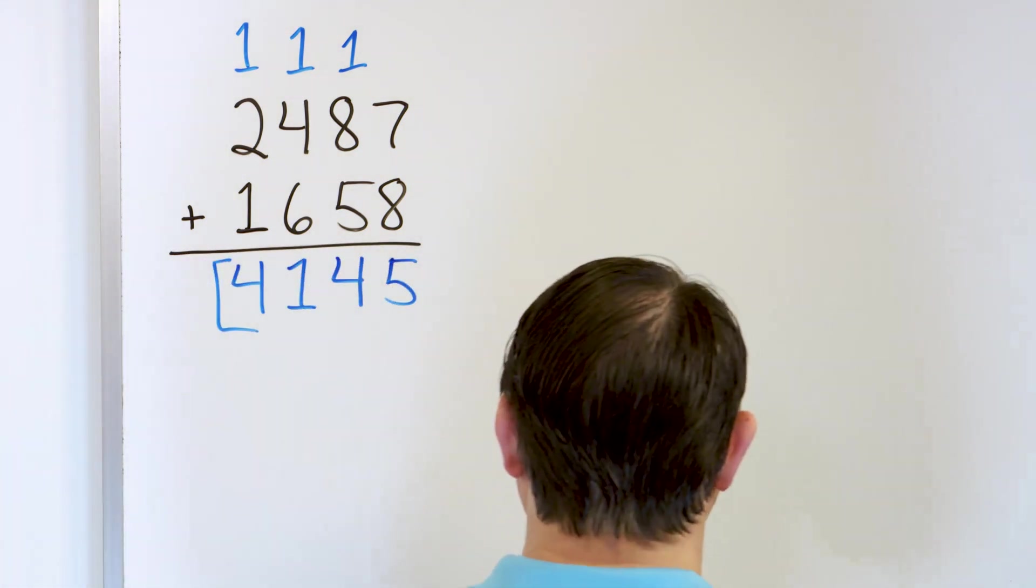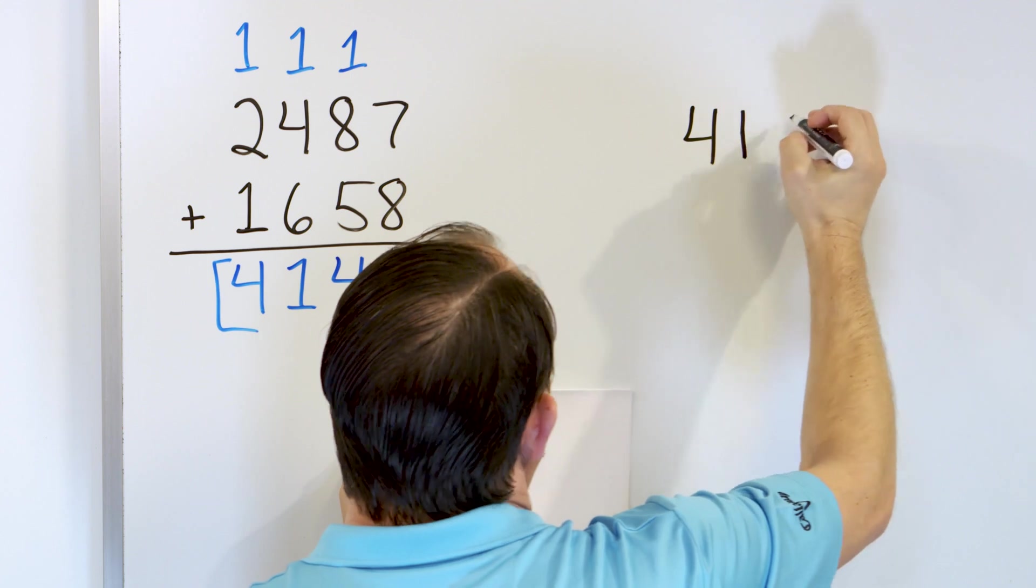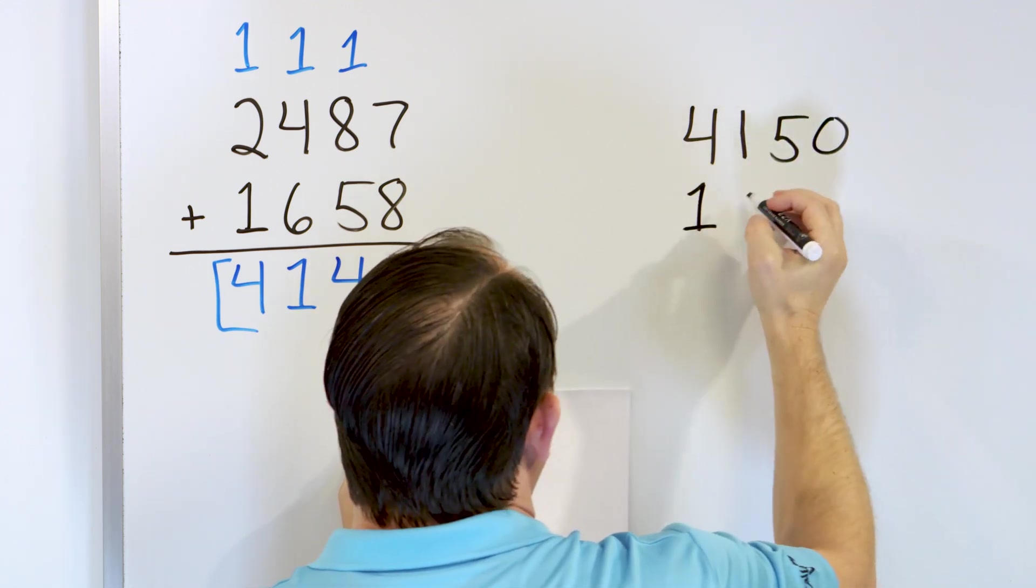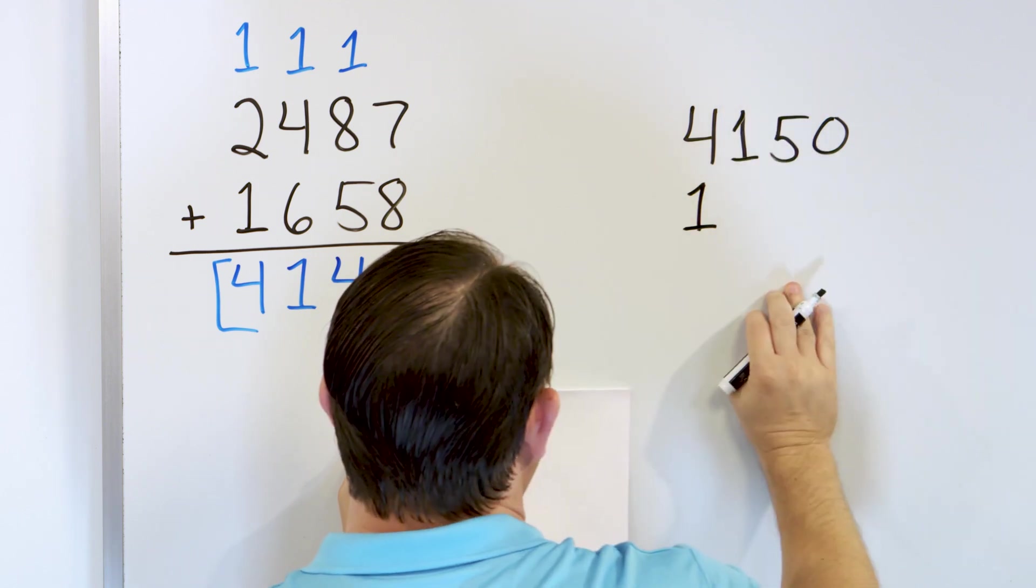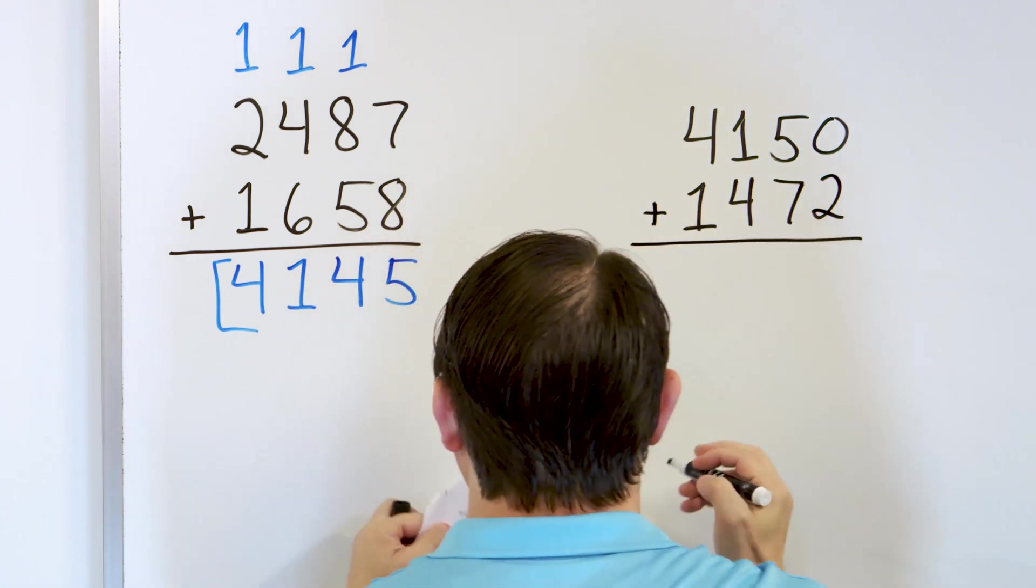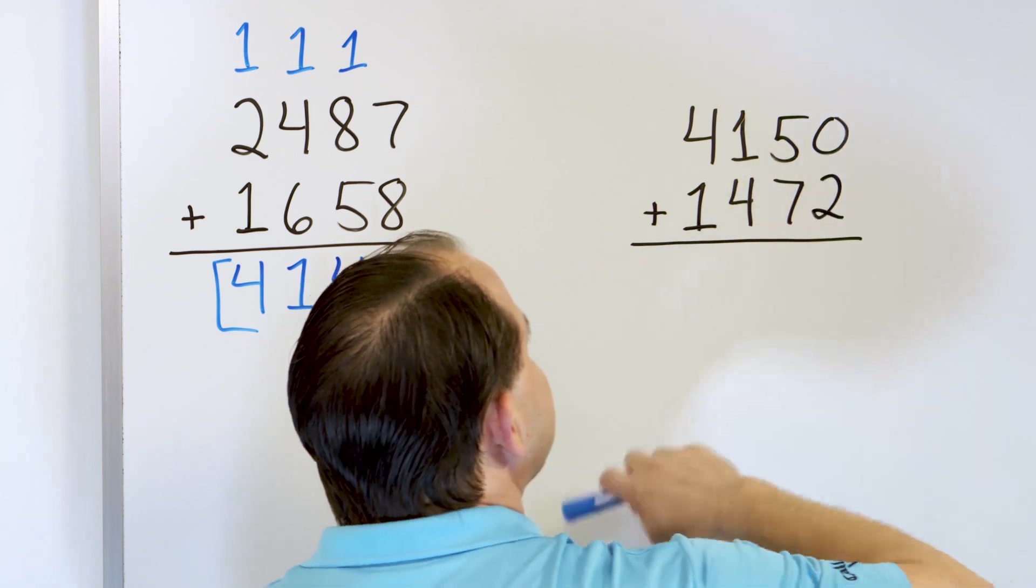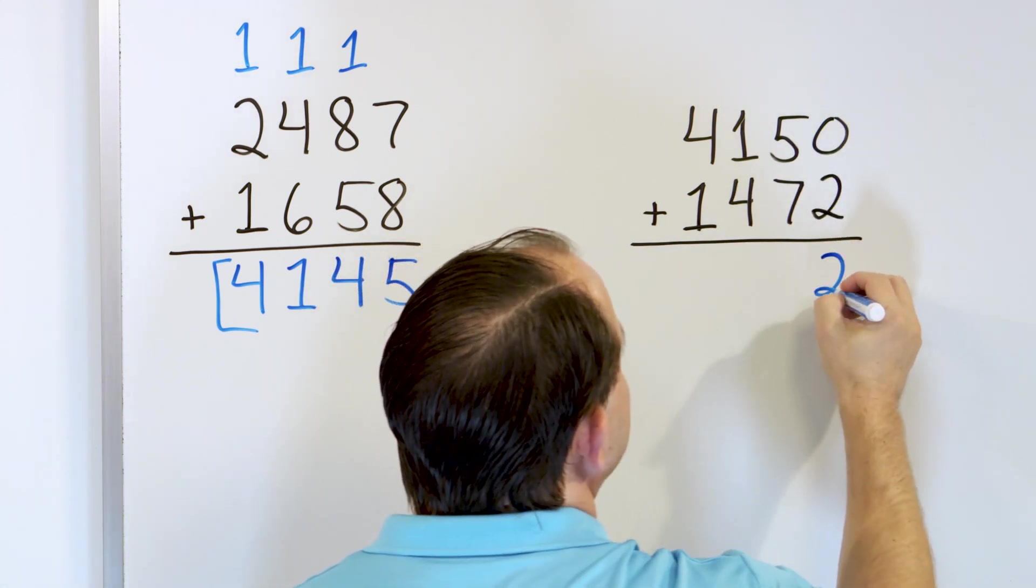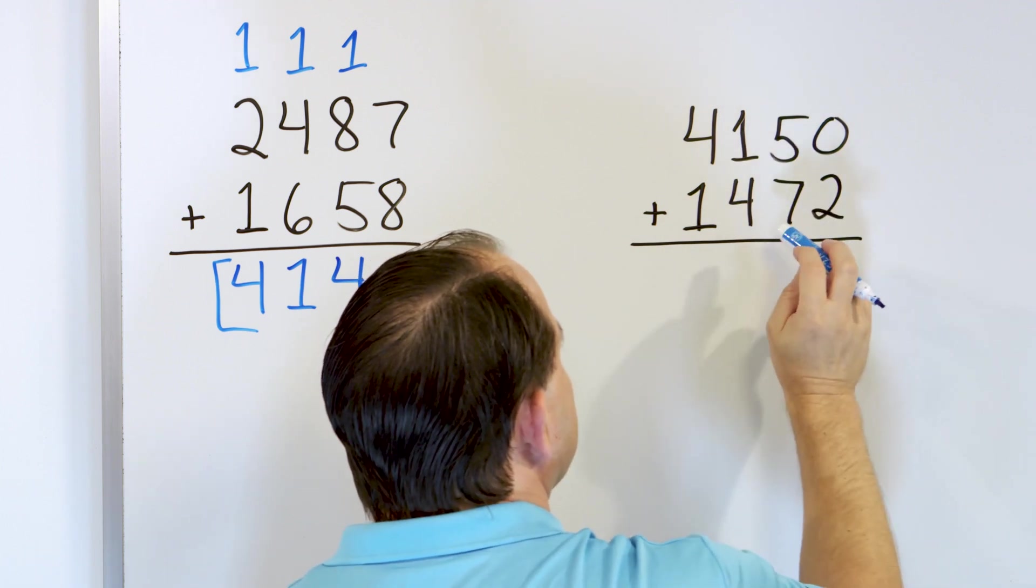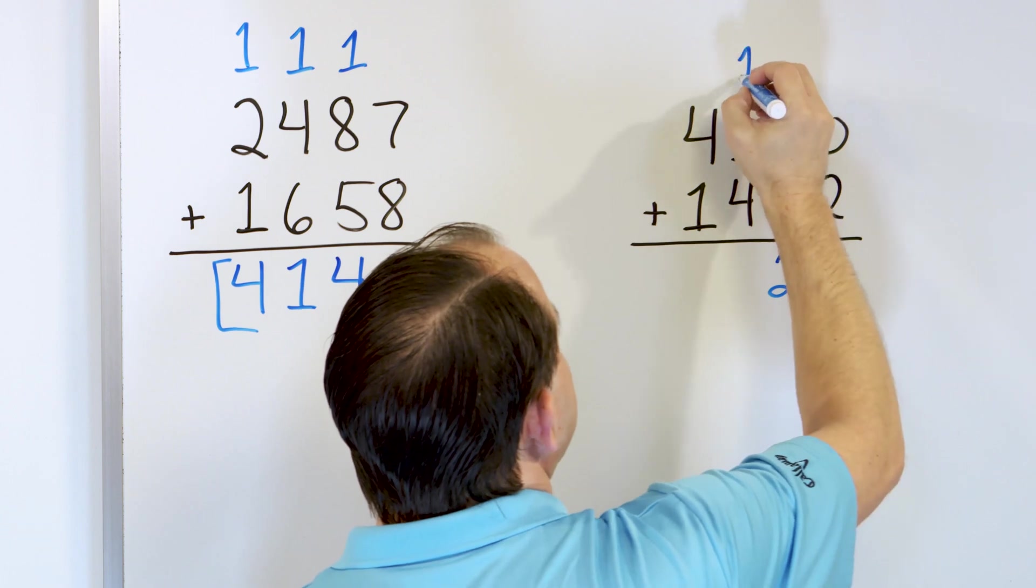Let's take a look at problem number 4. Let's take a look at 4,150. And we'll add to that 1,472. We'll add these together. So in the right-hand column, 2 plus 0 is still a 2. 7, we'll go up 5, 8, 9, 10, 11, 12. 12, we have to write as a 2 here and carry the 1.